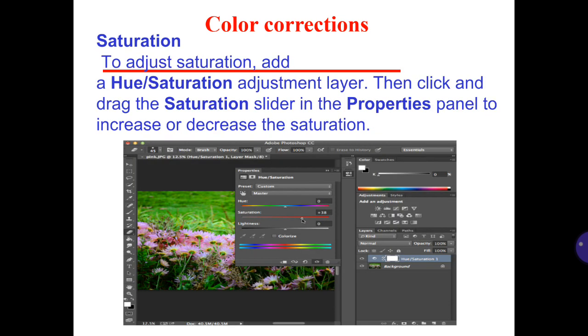To adjust saturation, add a Hue/Saturation adjustment layer, then click and drag the saturation slider in the properties panel to increase or decrease the saturation.